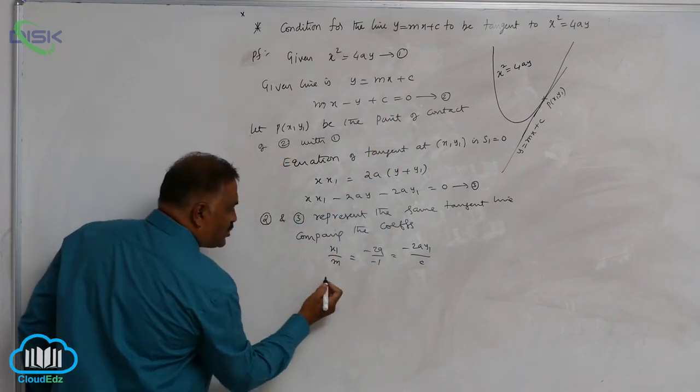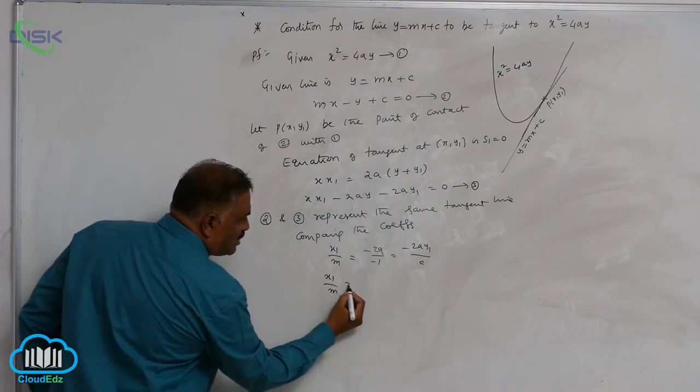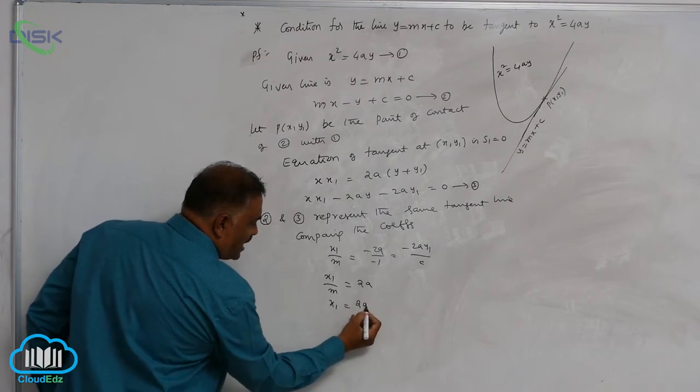Now first you take these two: x1 by m is equal to 2a, x1 is equal to 2am.